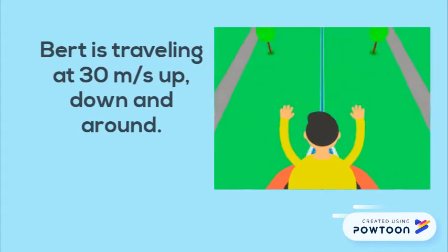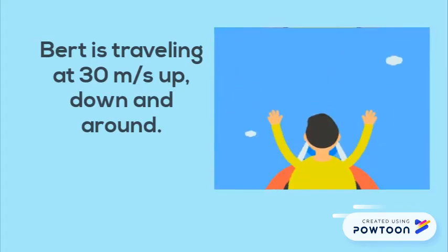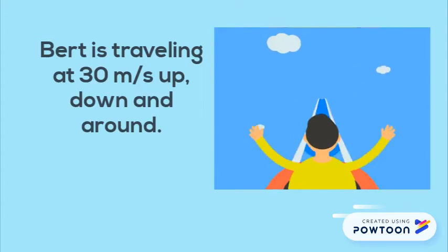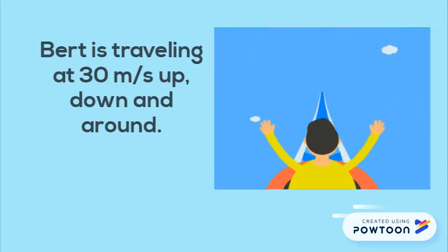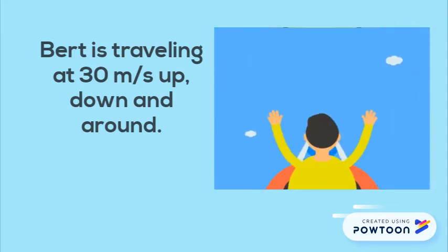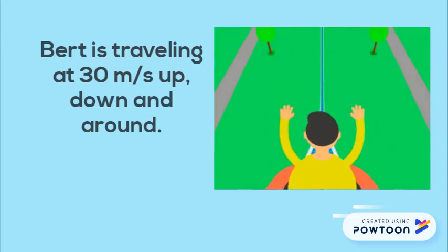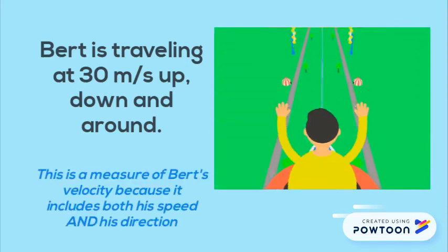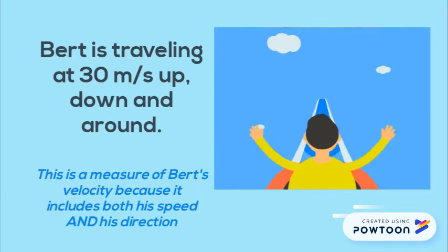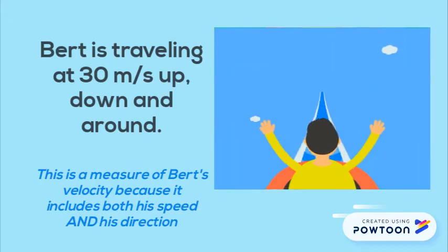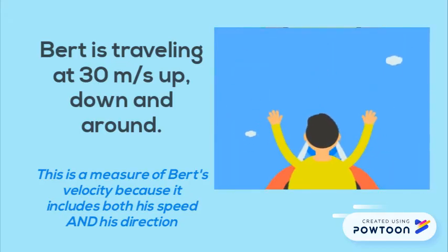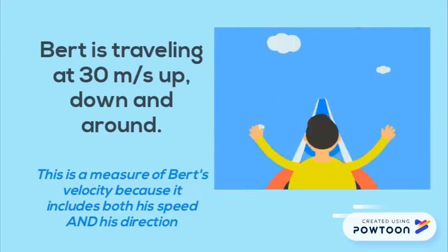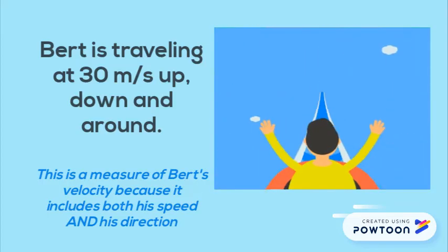This is Bert. He's traveling at 30 meters per second up, down, and around. Is this Bert's speed, his velocity, or his acceleration? This was Bert's velocity, because it includes both his speed and his direction. He also happens to be accelerating because his direction is changing, even though his speed is not.